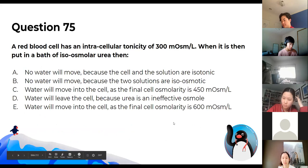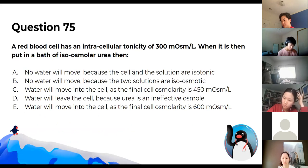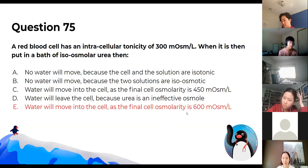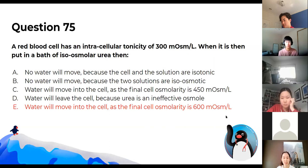A red blood cell has an intracellular tonicity of 300 milliosmoles. When placed in a bath of iso-osmolar urea, the final cell osmolarity is 600. Let's move on.